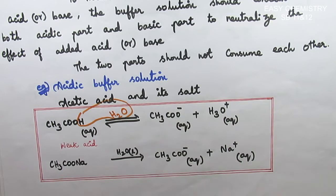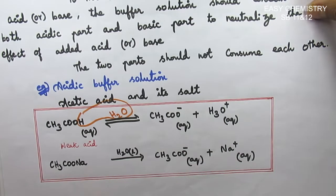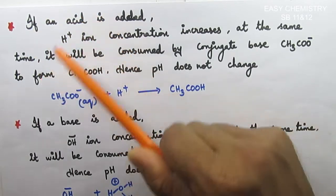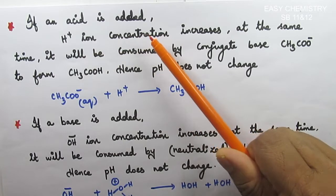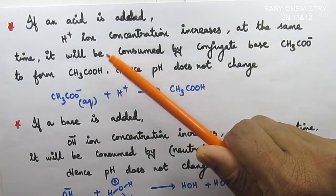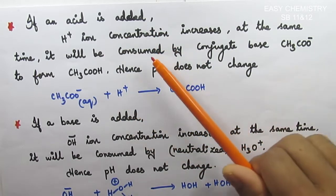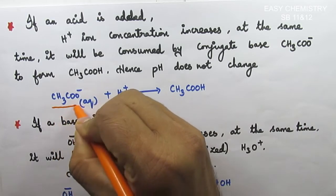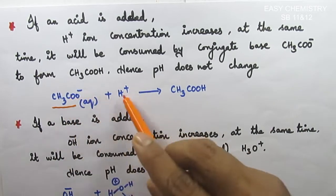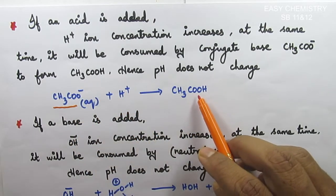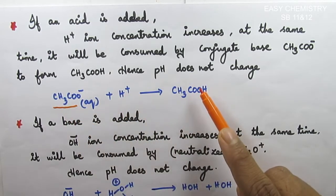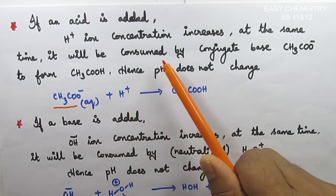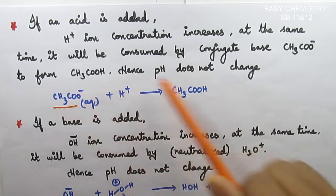When you add acid — meaning H plus ions — the H plus ion concentration increases. But the conjugate base CH3COO minus present in the buffer combines with the added H plus ions, converting them into acetic acid (CH3COOH). So the added H plus ions are consumed by the acetate ions, and pH remains constant.